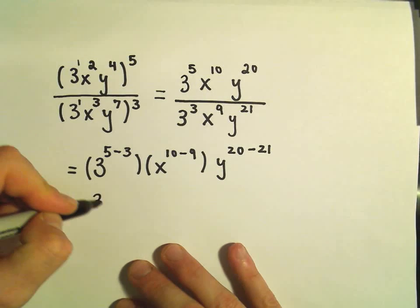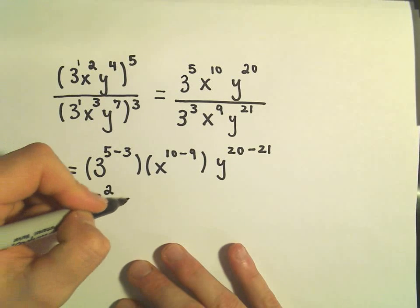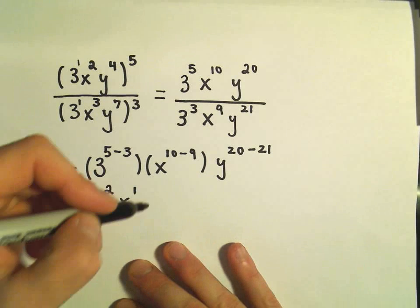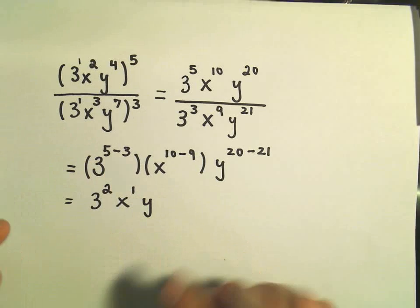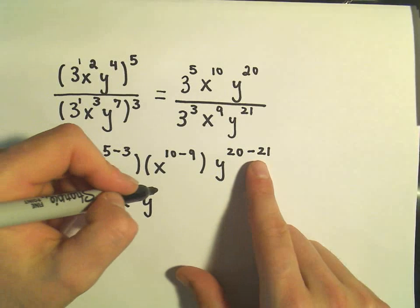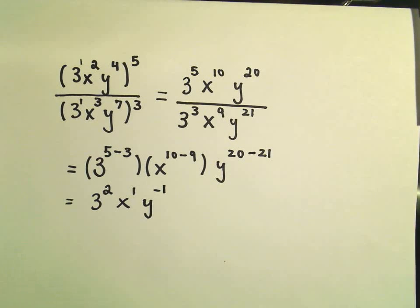So let's see. This is going to give us 3 to the second power. That's going to give us x to the first power. This is going to give us a y. If we take 20 minus 21, that's going to give us to the negative first power.